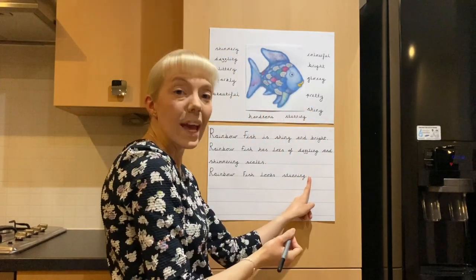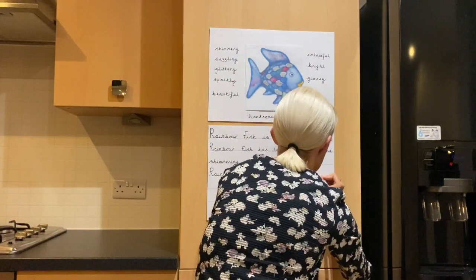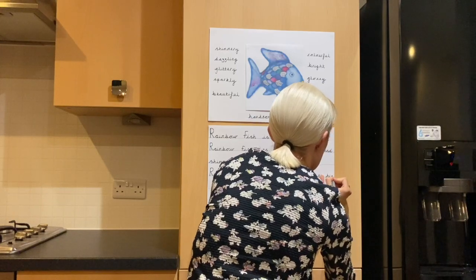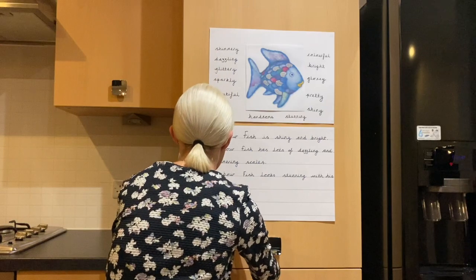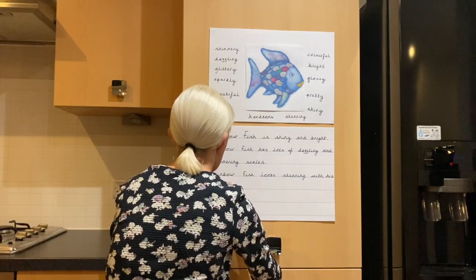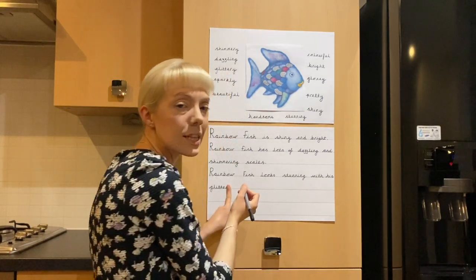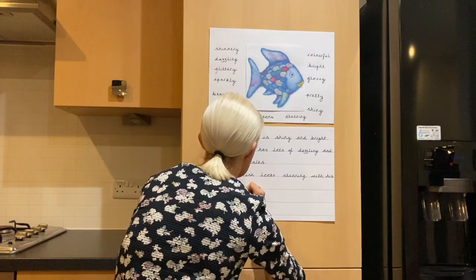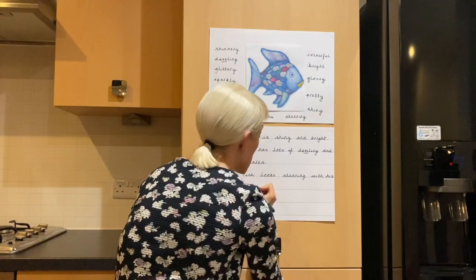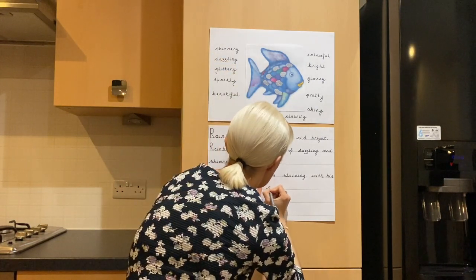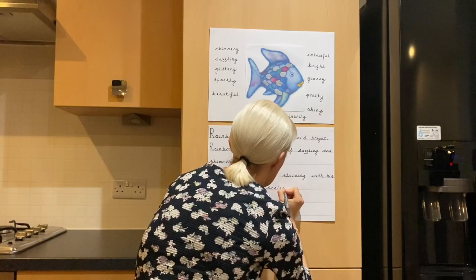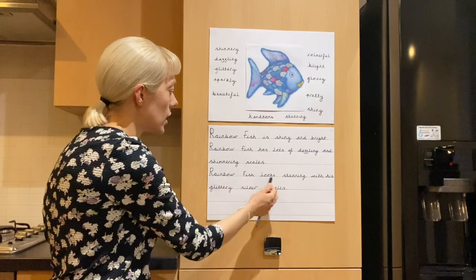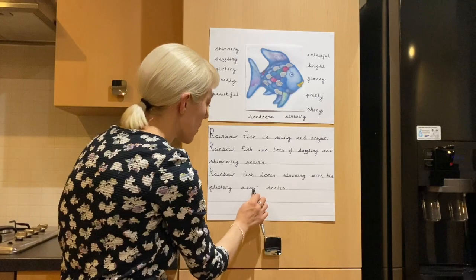Stunning with his glittery silver. Glittery — G, L, I, T, R, E — but we spell it with a Y. Glittery, silver — S, I, L, V, R — scales. And that's the end of my sentence so I need a full stop. Can you help me check my sentence by reading it back with me? Rainbow Fish looks stunning with his glittery silver scales.